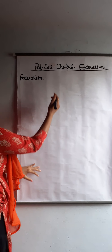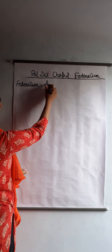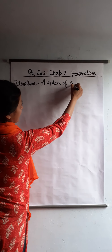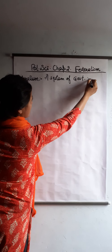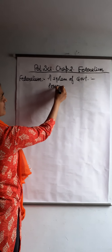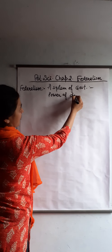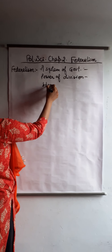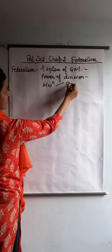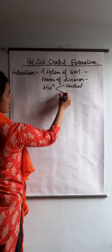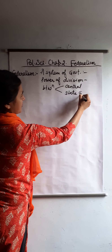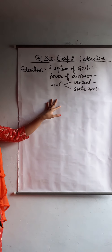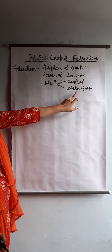Federalism is a system of government in which power of division is between central and state government. Federalism is that type of government in which power of division is between central and state government.